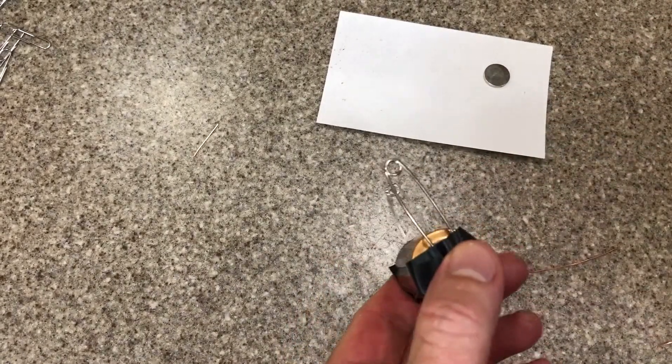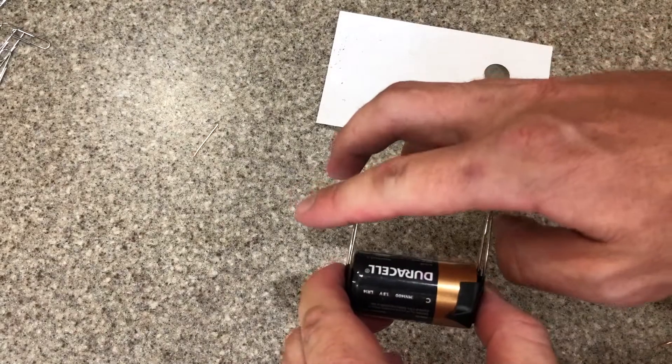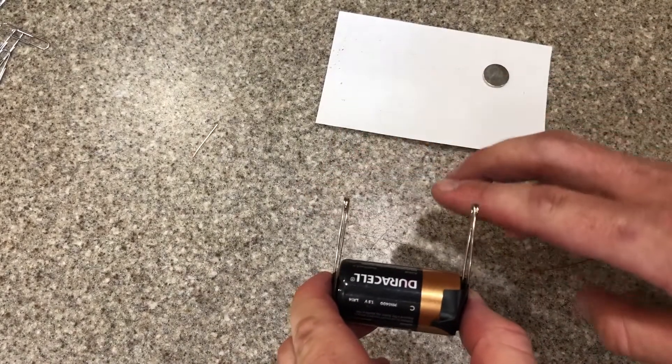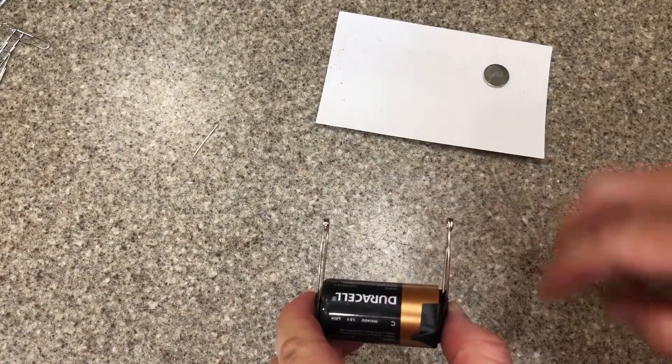Whenever you tape the safety pins on, make sure that these two little loops are level. That's very important. About the same height going up.